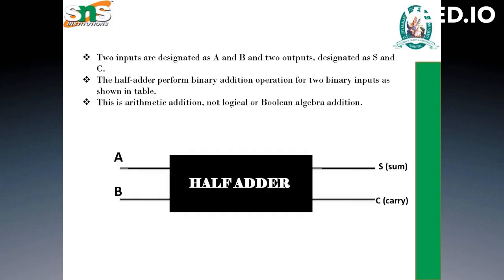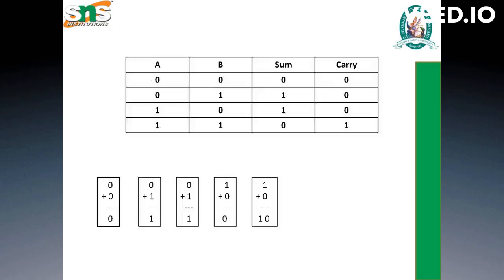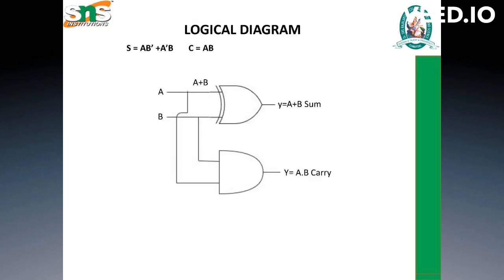If A is 1 and B is 1, the sum will be 0 and the carry will be 1. Here is the block diagram — we give two input values A and B into the half adder and receive a sum bit and a carry bit. This is the truth table showing A, B, sum, and carry: 0+0 gives output 0,0; 0+1 gives 1,0; 1+0 gives 1,0; and 1+1 gives sum 0 and carry 1.